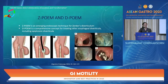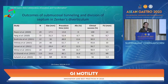Moving to C-POEM and D-POEM: C-POEM is an emerging endoscopic technique for Zenker's diverticulum, and D-POEM is a concept to treat other esophageal diverticula including epiphrenic diverticula. The outcome of submucosal tunneling and division of the septum in Zenker's diverticulum shows a clinical success rate of over 90%, with common adverse events around 5 to 10%.